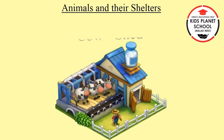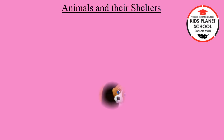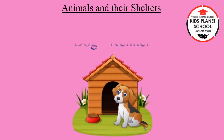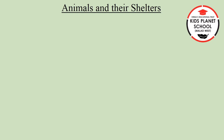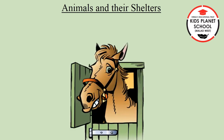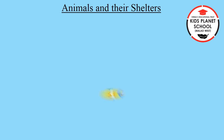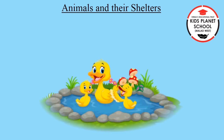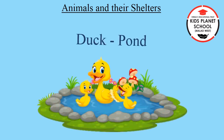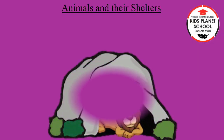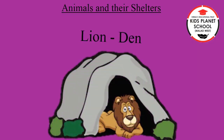The house of cow is shed. The house of dog is kennel. The house of horse is stable. The house of lion is den.